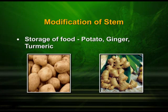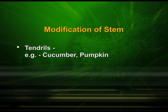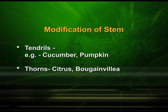Stem is also modified for various different purposes. In potato, ginger, and turmeric, they are modified for the storage of food. In case of cucumber and pumpkin, the stem is modified into tendrils for the purpose of support. In case of citrus and bougainvillea, we find the presence of thorns, which are responsible for defense purposes.